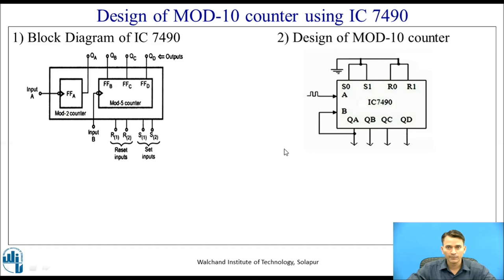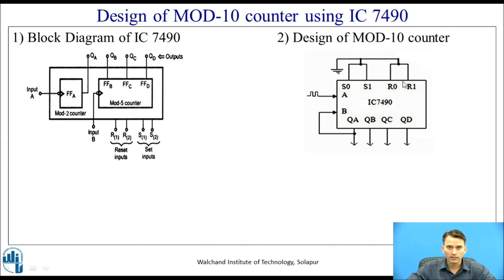We make the connection so that it counts from 0000 and stops at 1001. The basic clock input is given to clock A. Since it is an asynchronous counter, the output of the first flip-flop QA is given as the clock to input B of the mod-5 counter. The output is taken as QA, QB, QC, QD. Both set inputs S1, S2 and reset inputs R1, R2 are connected to ground for normal operation, since these are active high and would cause set or reset if driven to 1.